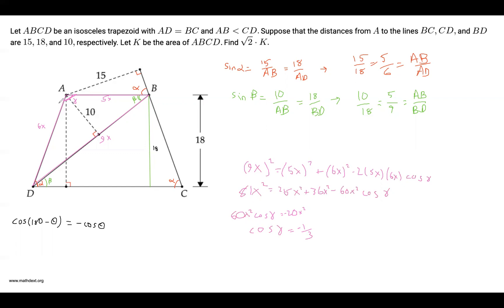Notice that gamma and alpha sum up to 180 degrees because this is an isosceles trapezoid. So cosine of gamma is actually equal to cosine of 180 minus alpha equals to negative 1 over 3. And take a look back here. Cosine of 180 minus theta equals negative cosine theta for any angle theta, which means that cosine alpha is positive 1 third.